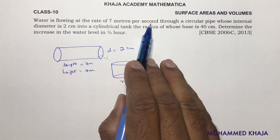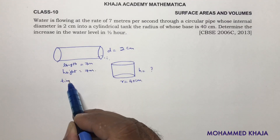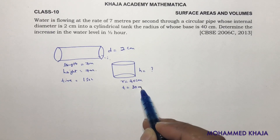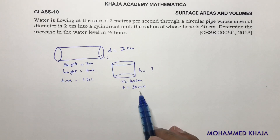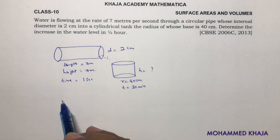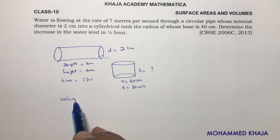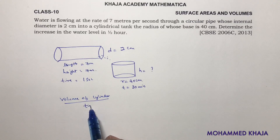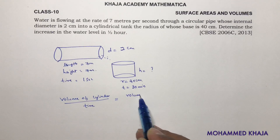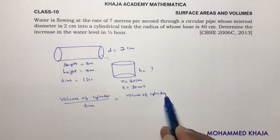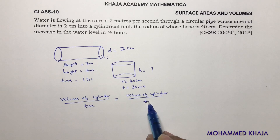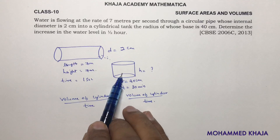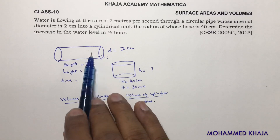The flow rate is 7 meters per second, so time for the pipe is 1 second. The total time is 30 minutes, because half an hour is 30 minutes. Now, the key principle: volume of cylinder divided by time equals volume of cylinder divided by time, because it is the same water — the water filling this cylindrical tank is coming from this pipe cylinder.